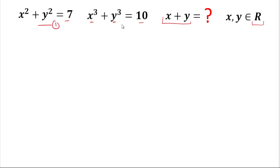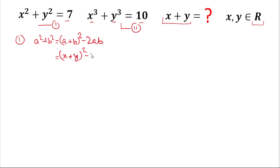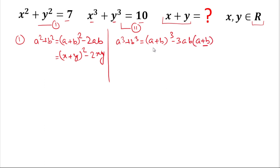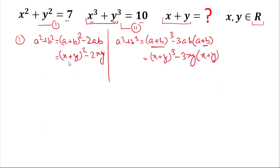We'll label the first equation as equation 1 and the second as equation 2. Equation 1 is in the form a² + b², so using the identity a² + b² = (a+b)² - 2ab, we can write x² + y² as (x+y)² - 2xy. For equation 2, using a³ + b³ = (a+b)³ - 3ab(a+b), we write x³ + y³ as (x+y)³ - 3xy(x+y).